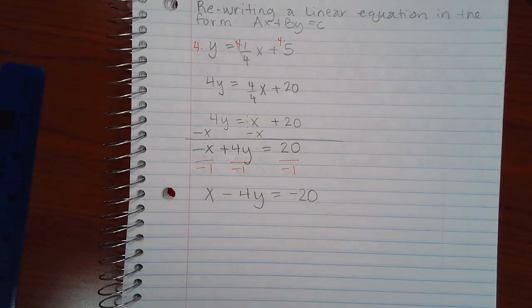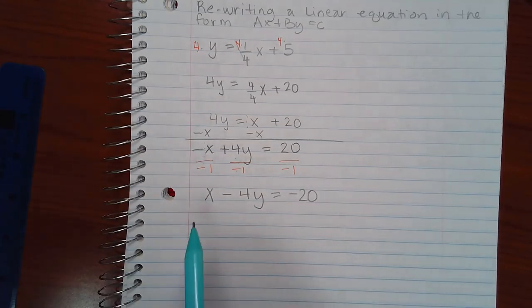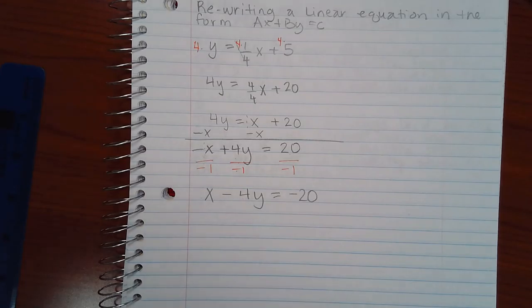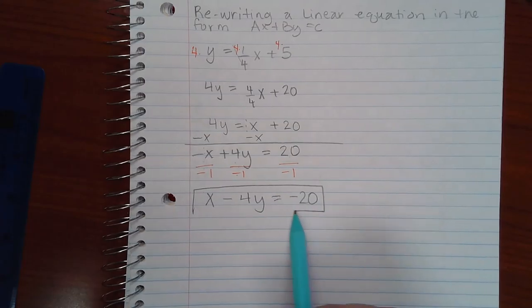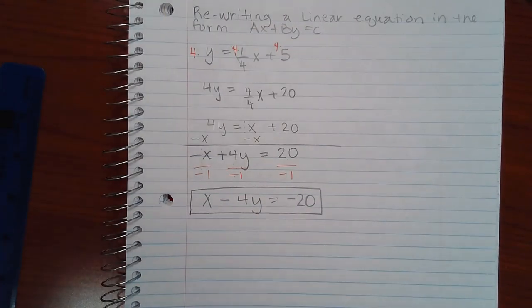Now, the equation is in standard form. You have the integer positive 1, the integer negative 4, and the integer negative 20. Now we have successfully written this expression or this equation in the correct form.